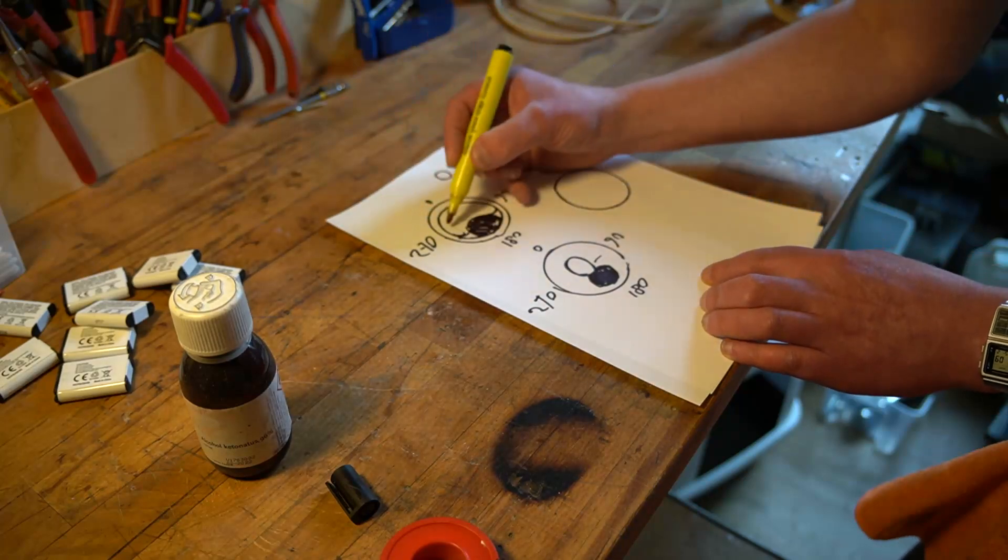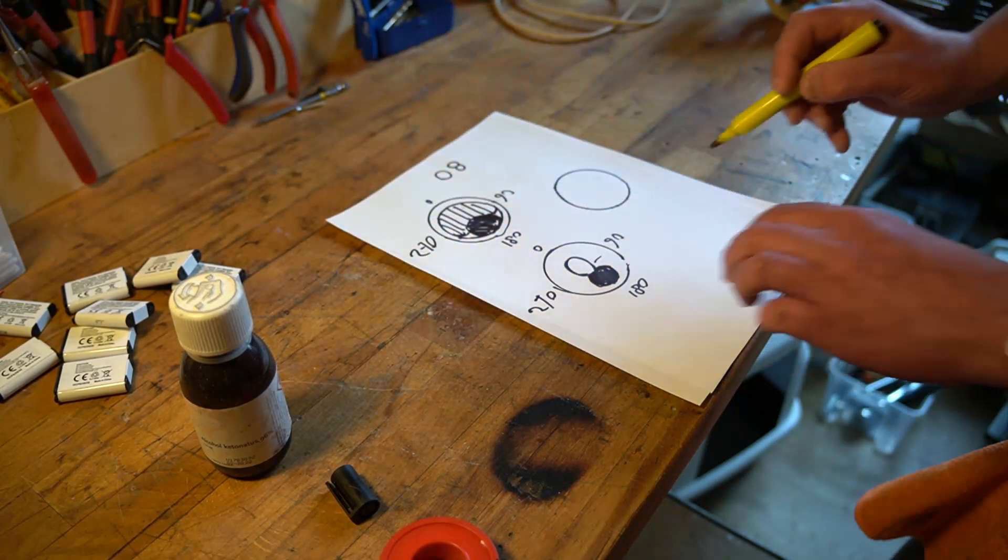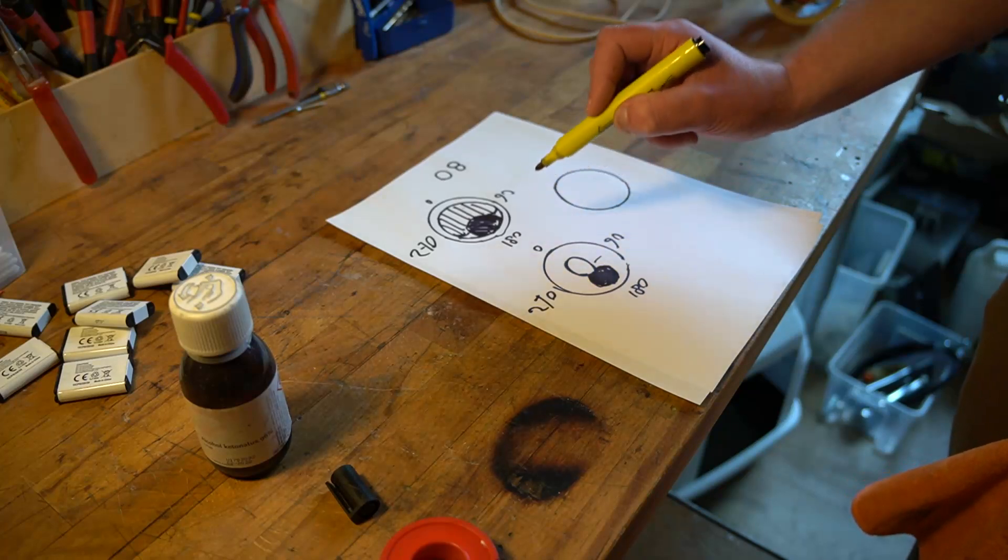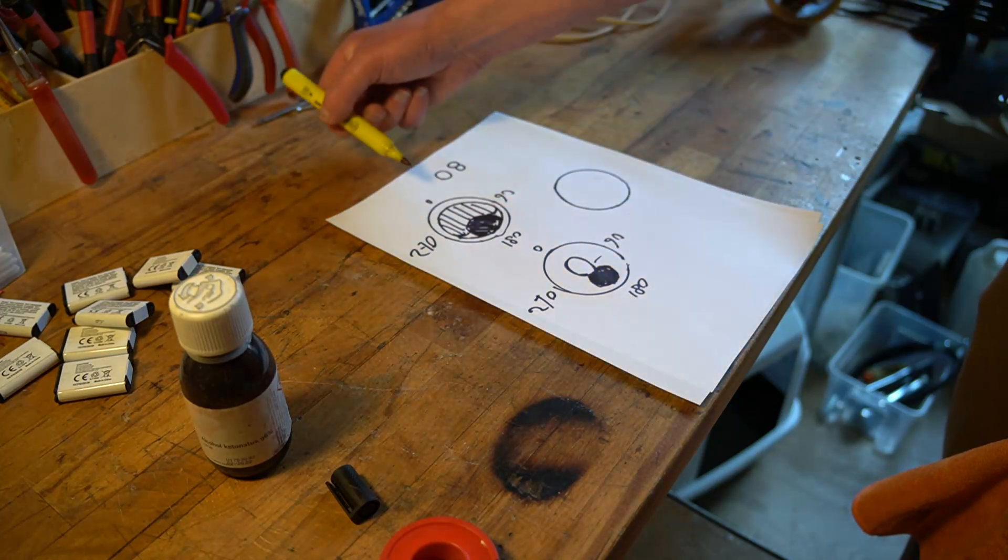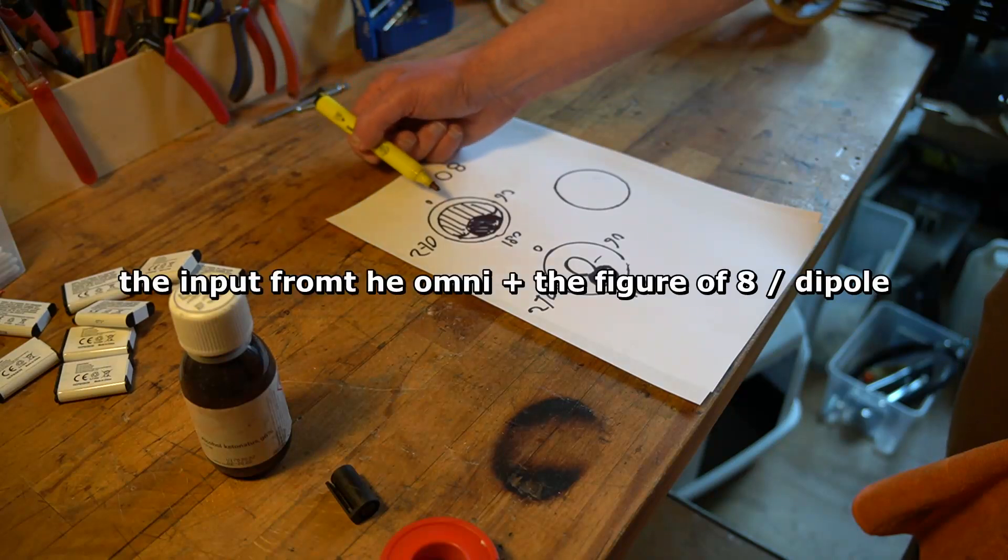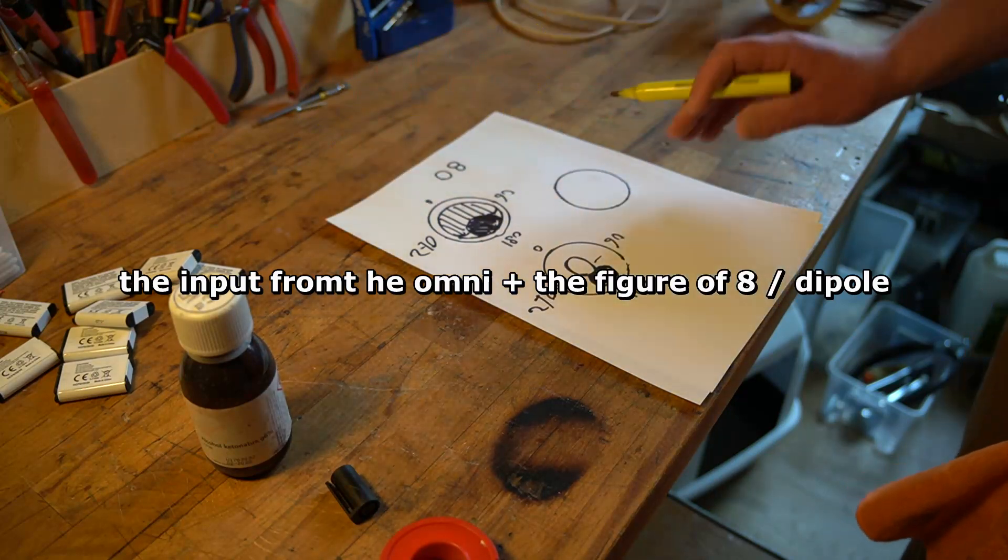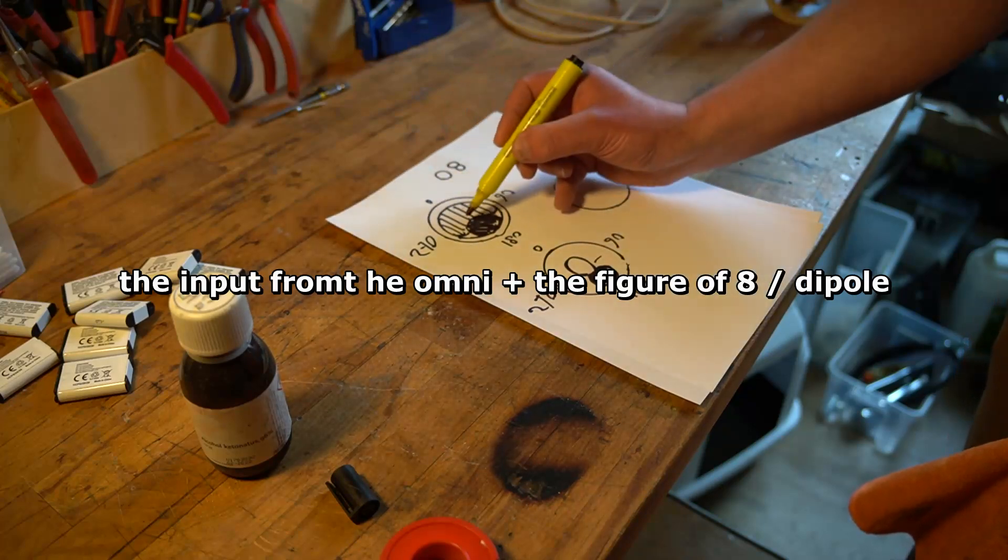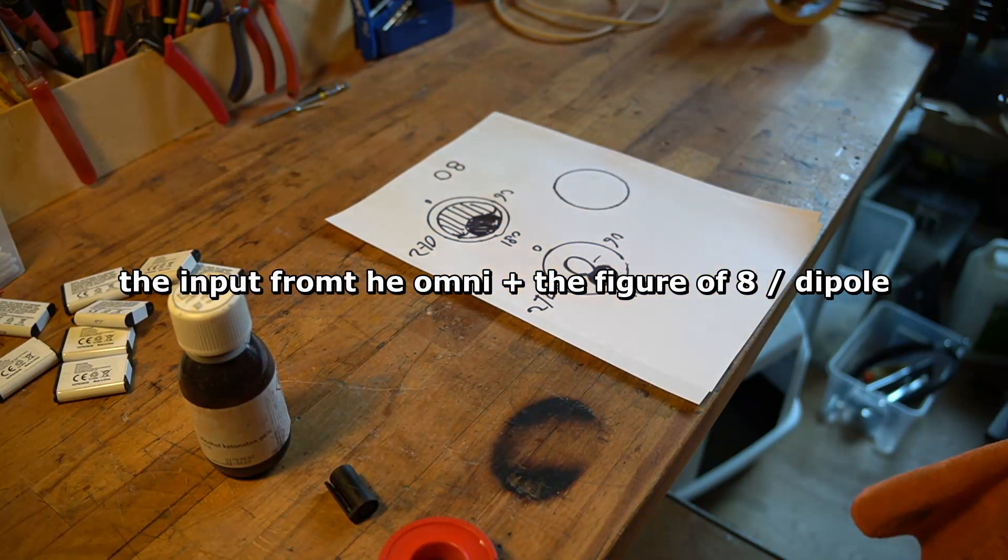But this now is a cardioid pattern. It has in theory zero input from 180 on the back. And it has all the input from the front. Well, it's actually, so it's not like a gain. Well, you have two mics. So it sort of is here. It adds up and here it gets removed. And then you get this pattern. And the same goes for loudspeakers.